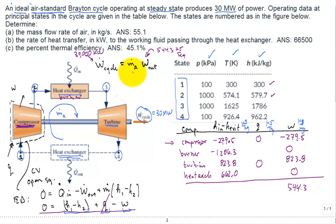I'm just going to say that M dot A comes in to be 55.1 kilograms per second. And that's our answer for part A.